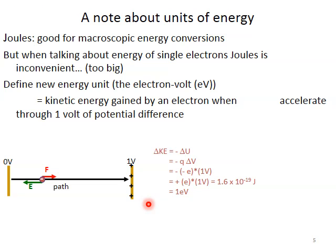All right, so let's talk about units right now. So far, in 153 and 163, we have used a unit of a joule to describe energy, and it's a great unit for macroscopic ideas. But when you're talking about energy of single electrons, joules are inconvenient. It's way too big. So we're going to define a new unit, the electron volt. We should have already been exposed to this in 163 and 153.